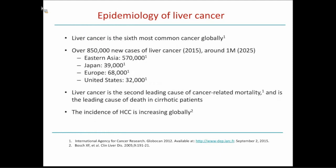Here you have the outline of my presentation. In terms of epidemiology, you are very familiar that liver cancer is the sixth most common cancer globally. Nowadays there are 750,000 new cases, and it is estimated that by 2030, there will be around 1 million new cases globally. The distribution breakdown is mostly Eastern Asia at 570,000. Japan, where the incidence is decreasing because the population is aging, and as a result of that, the incidence is decreasing.